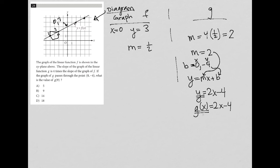So now if I'm asked to figure out what g(9) is, I just replace x with 9. So I'd have 2 times 9 minus 4. 2 times 9 is 18 minus 4. 18 minus 4 is 14. Therefore, the correct answer here is choice C.